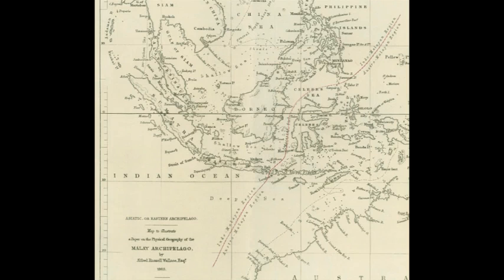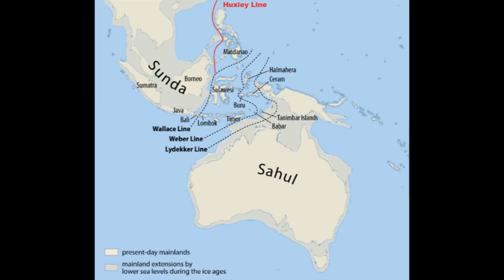Australia is likewise connected by the Sahul Shelf to New Guinea. The biogeographic boundary known as Lydekker's Line, which separates the eastern edge of Wallacea from the Australian region, has a similar origin to the Wallace Line. During Ice Age glacial advances, when ocean levels were up to 120 meters (390 feet) lower, both Asia and Australia were united with what are now islands on their respective continental shelves as continuous land masses, but the deep water between those two large continental shelf areas was, for over 50 million years, a barrier that kept the flora and fauna of Australia separated from those of Asia.